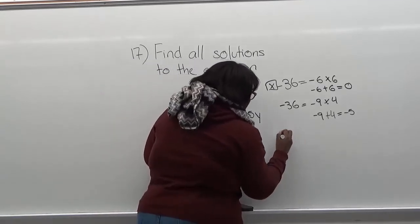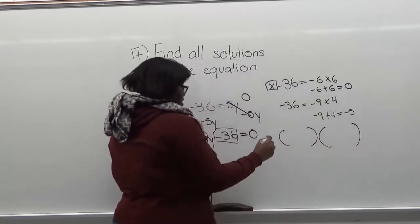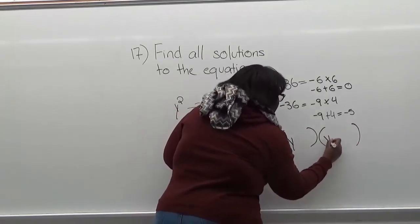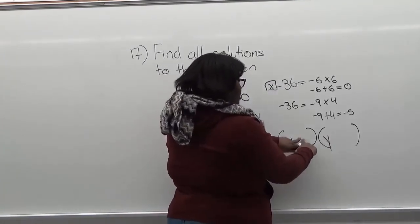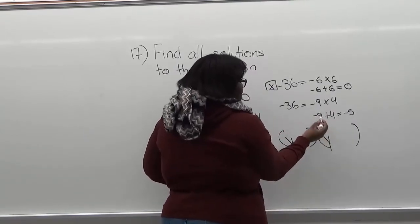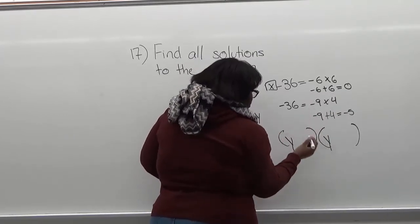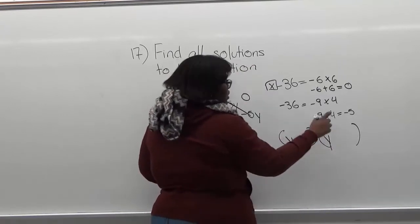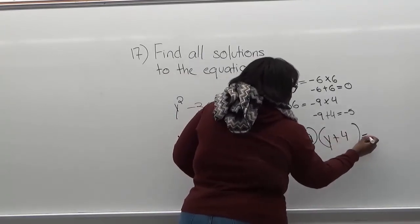Now when you rewrite this, you're going to have your two empty parentheses with y here and y here. You're going to decide whether this is going to be negative or positive based on these two numbers. Since we have a negative 9, this will be y minus 9 and then y plus 4 equal to 0.